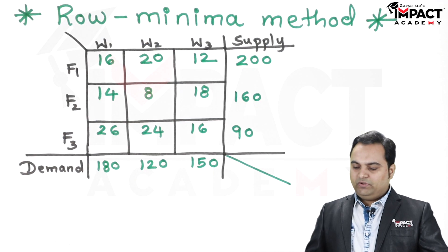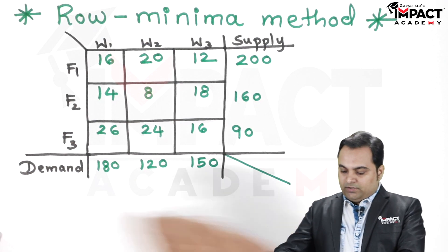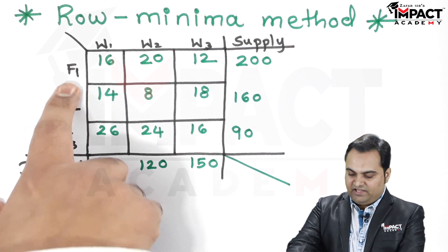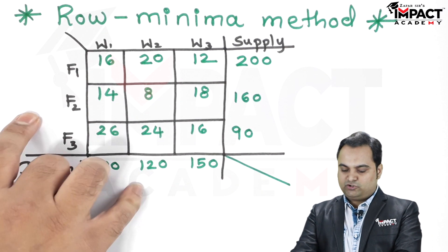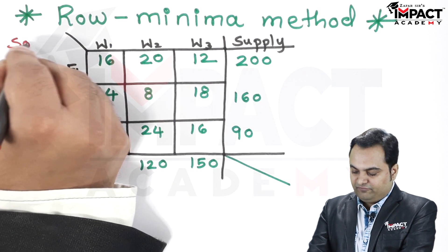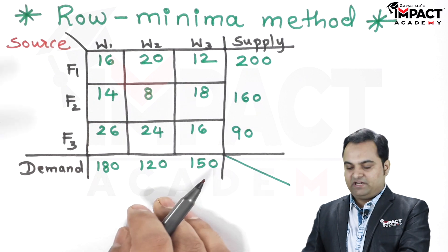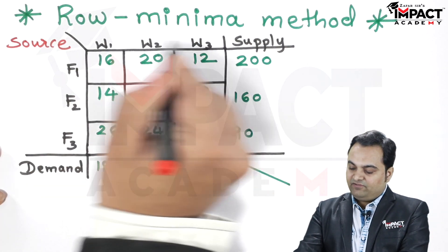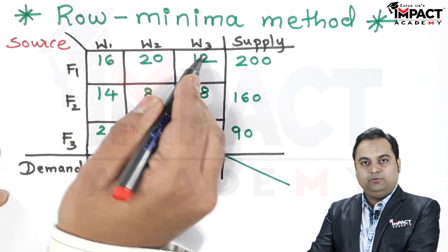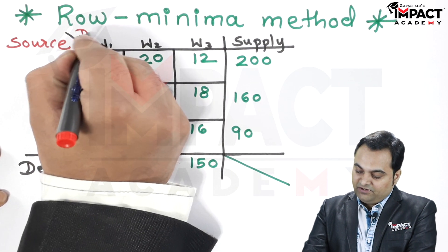Hi friends, in this video I'll be explaining the Row Minima Method. We have factories F1, F2, and F3, also called sources, from where the material or shipment is to be transported, and warehouses W1, W2, and W3, which are the destinations.